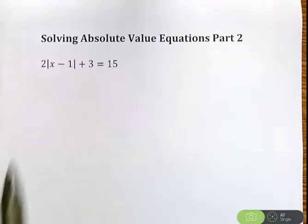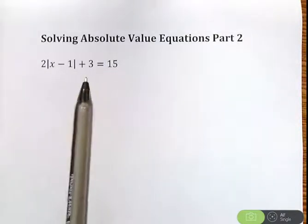So let's just jump right into it. So I have 2 absolute value of x minus 1 plus 3 equals 15.